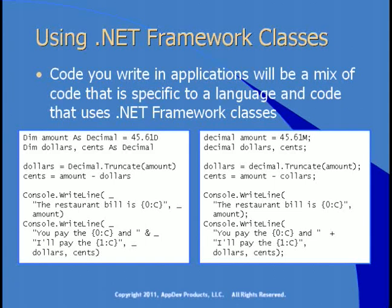The second line of code creates two additional decimal variables, dollars and cents. The third line uses the Truncate method from the decimal structure, which is defined in the .NET Framework, and truncates the amount. Truncate returns the integer portion of this decimal number, so dollars is equal to 45. The next line of code subtracts dollars from amount — that equals cents. Next, we use the WriteLine method of the Console class, which is in the .NET Framework, to display the total bill, and then the final line uses WriteLine to display the dollars and the cents.